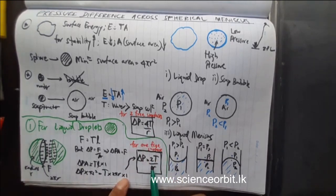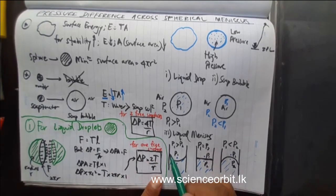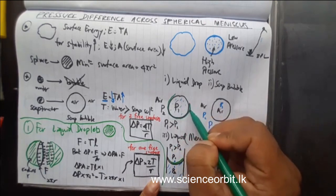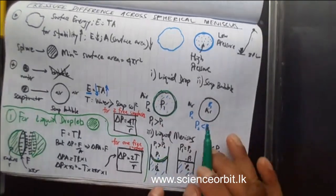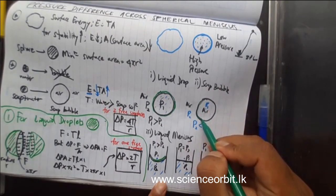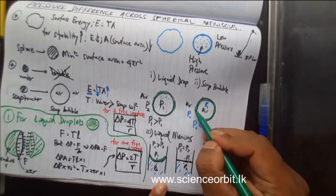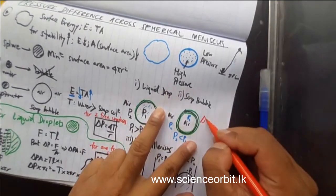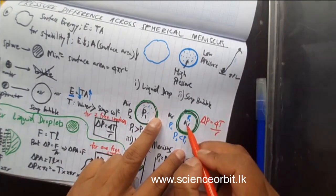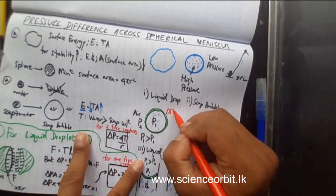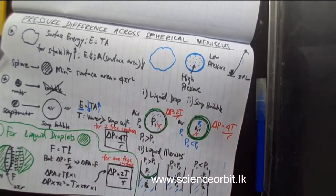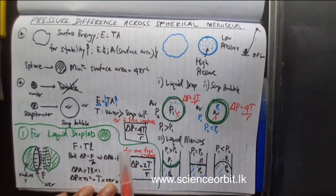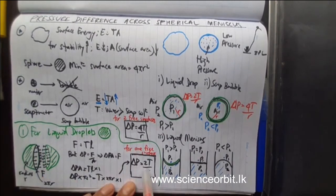So this is the equation you will be using. If they give you a liquid meniscus, check how many free surfaces there are. For a sagging meniscus and a hogging meniscus, there is only one free surface each — so for all these one-free-surface cases you use ΔP = 2T/R, where R is the radius. For a soap bubble, there are 2 interfaces — one inside and one outside — so for that case you use ΔP = 4T/R. We will do some questions so that you get a better understanding of how to apply these equations for real-life situations.